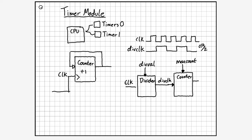These timers often also have a way to generate interrupts — this is called an alarm with timers. Basically you can set the timer such that when the counter reaches a certain value, it generates a signal to trigger the execution of other things in the system. For this lab and lecture, we're not going to worry about this quite yet, but we will be looking at it soon.